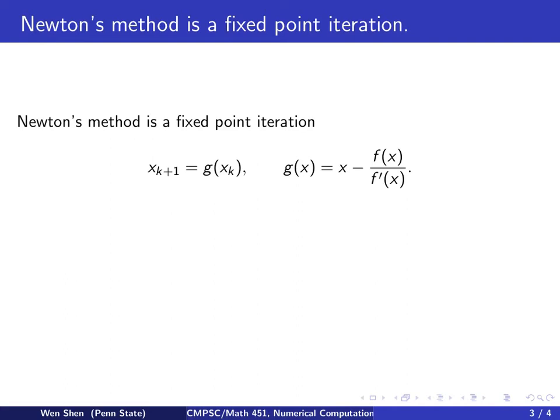Before we take an example, let's build some connections. Newton's method is actually a fixed point iteration. If we write our g to be x minus f of x over f prime of x, and then xk plus 1 equals to g at xk, that's exactly the Newton's iteration that we derived on the previous page.